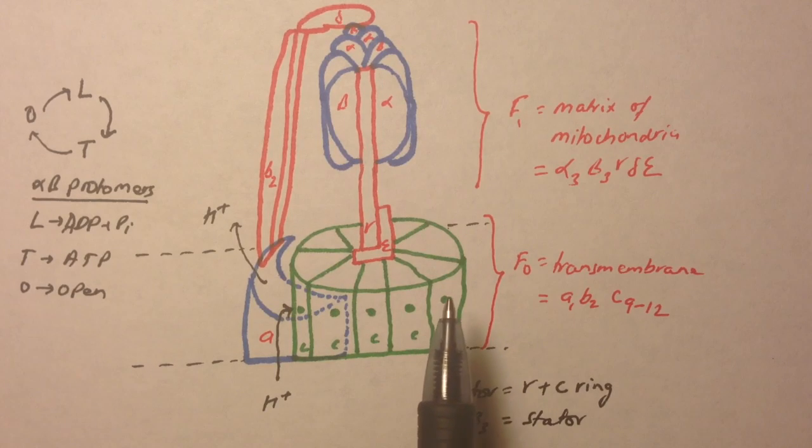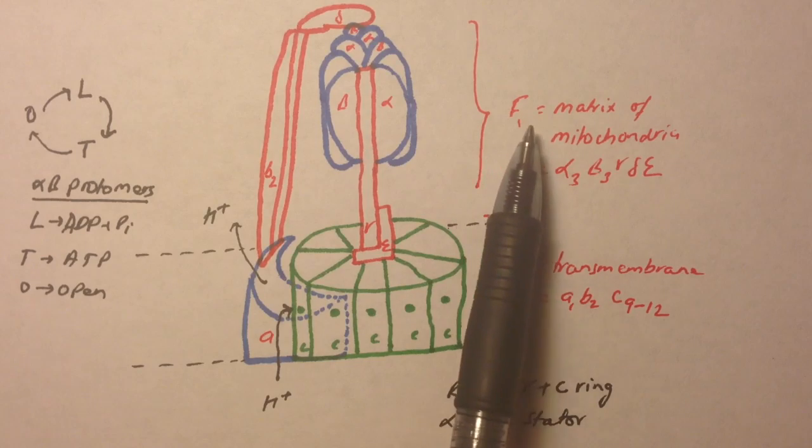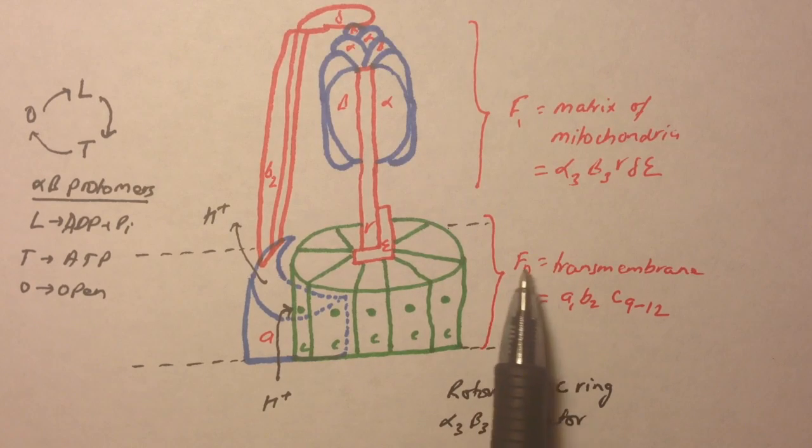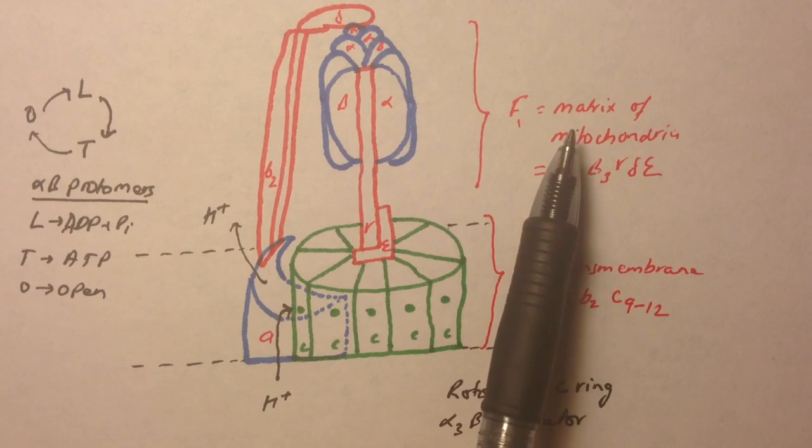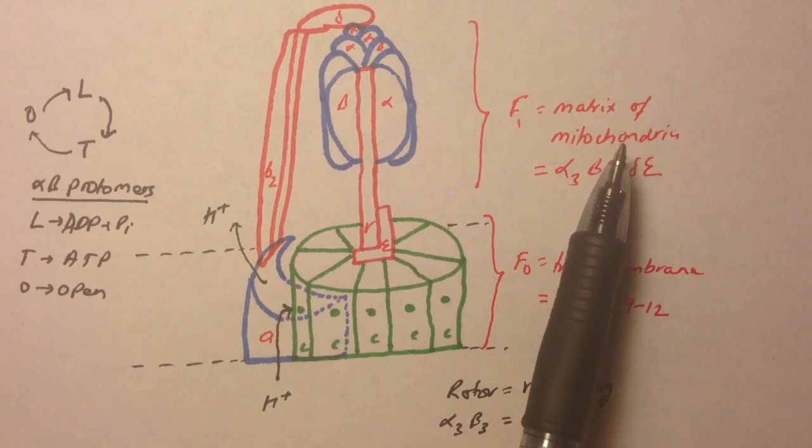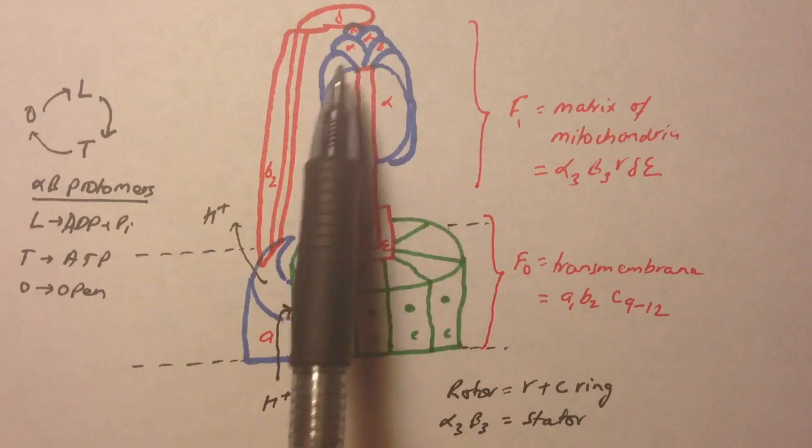ATP synthase is composed of two subunits: one is called F0 and one is called F1. F0 is a transmembrane part and F1 is a peripheral protein on the mitochondrial matrix side. This F1 is never on this side, it's always on this side.